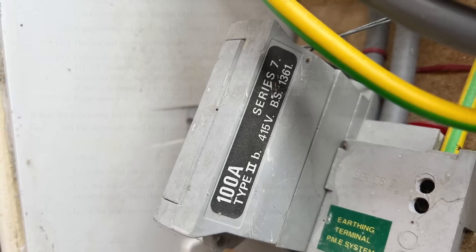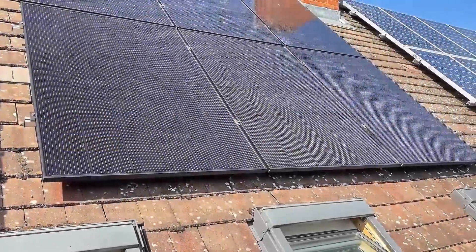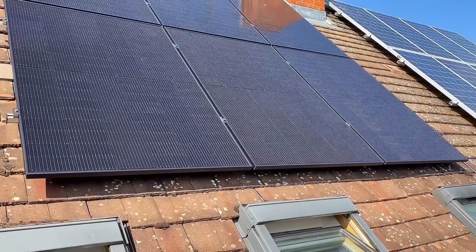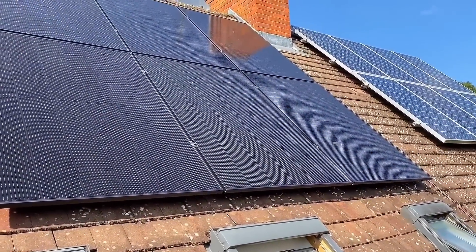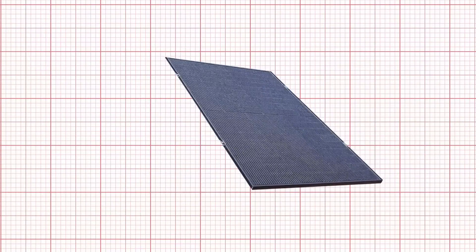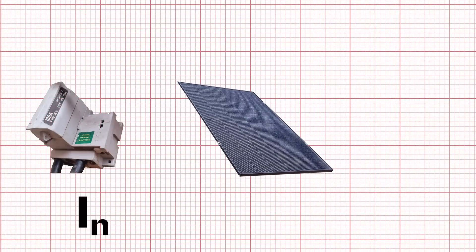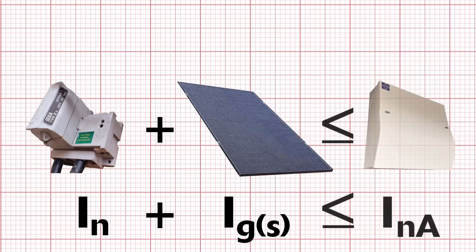So in this installation you can see it's a 100 amp fuse. Finally, IGS is how much current the generating set is capable of outputting. In a domestic setting this is likely to be 16 amps due to the export restriction placed on this kind of installation. So the regulation is telling us that when you add together the current that can be drawn through the supply and the current that can be generated by and drawn from the PV panels, it must be lower than the rated current of the assembly.